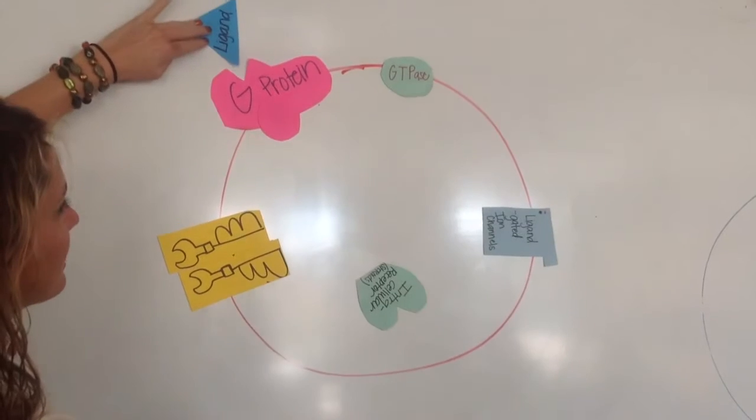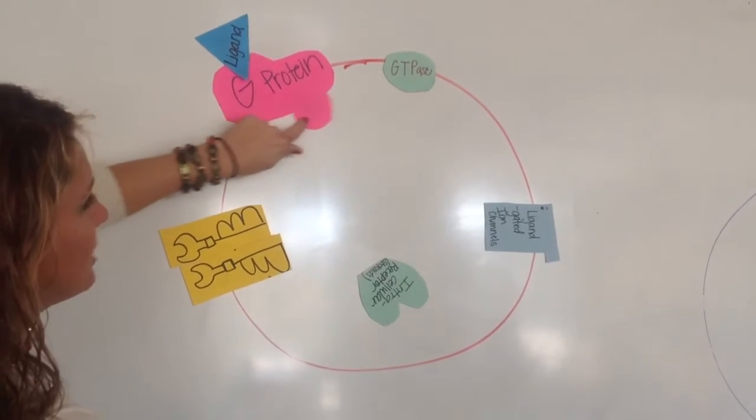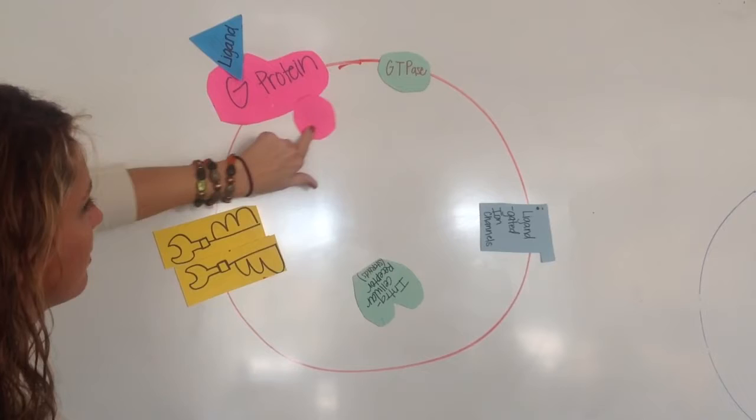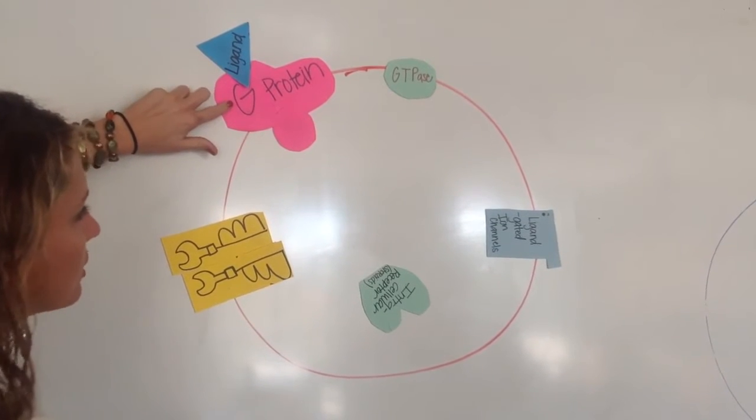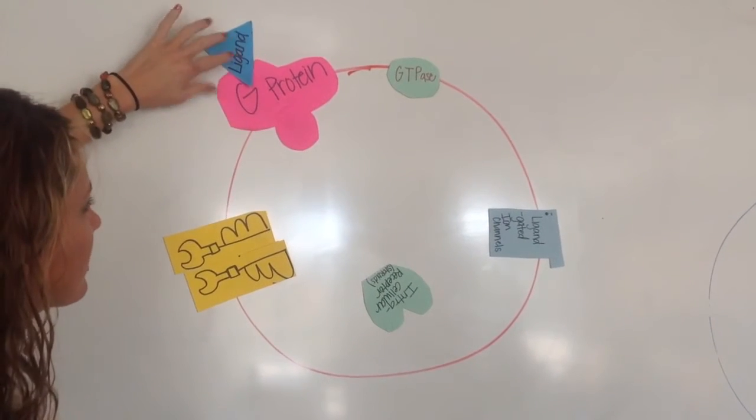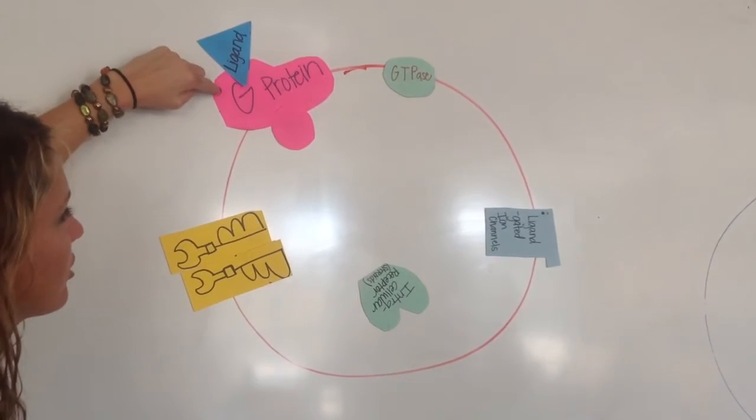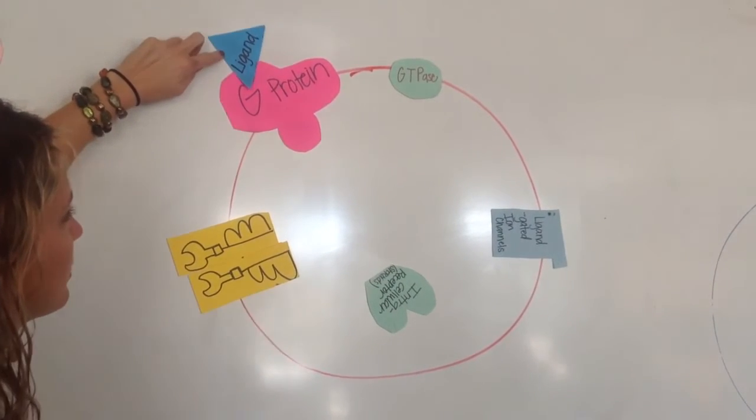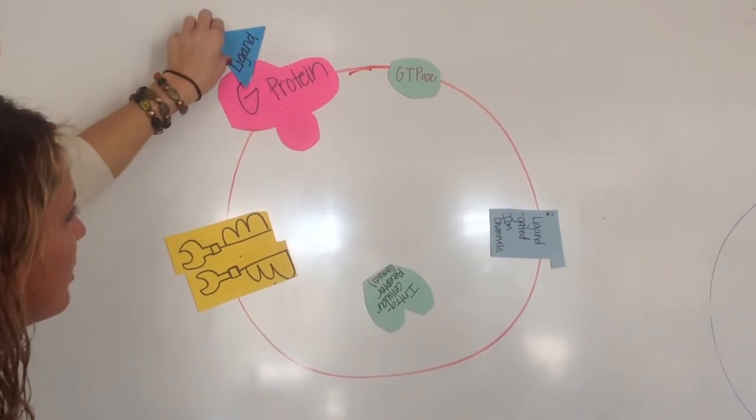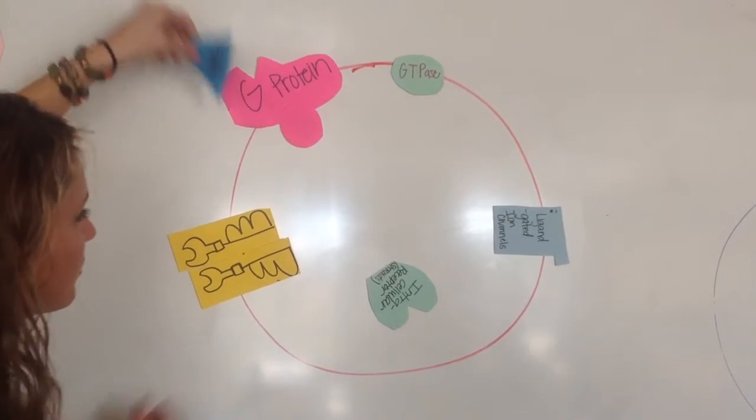So when the ligand binds to the G-protein, it changes shape. So that's actually reception of signal transduction. But all cells have a G-protein, and it's just the most common for cell communication. And it responds to a ligand, which is a hormone or a signal molecule. So G-protein is first.